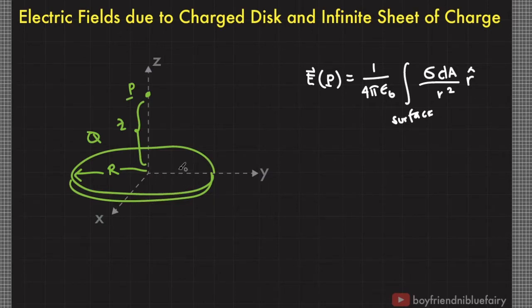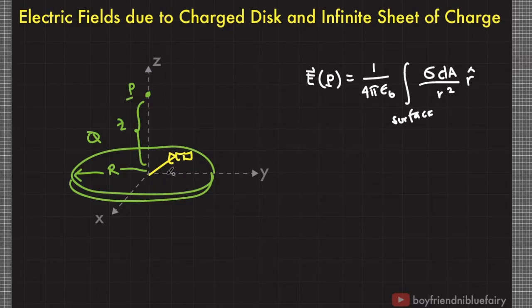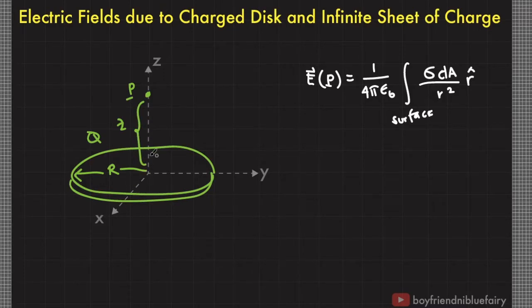We could divide the disk into patches of small squares, but integration becomes difficult because we would be managing x and y variables enclosed by a square root due to the Pythagorean theorem. A more efficient approach is to observe the symmetrical feature of the disk, which presents cylindrical symmetry with respect to the z-axis. As such, we can divide the disk into strips of rings.